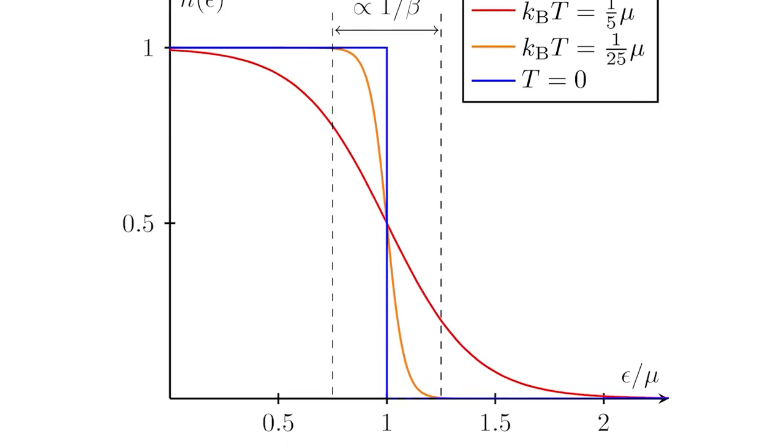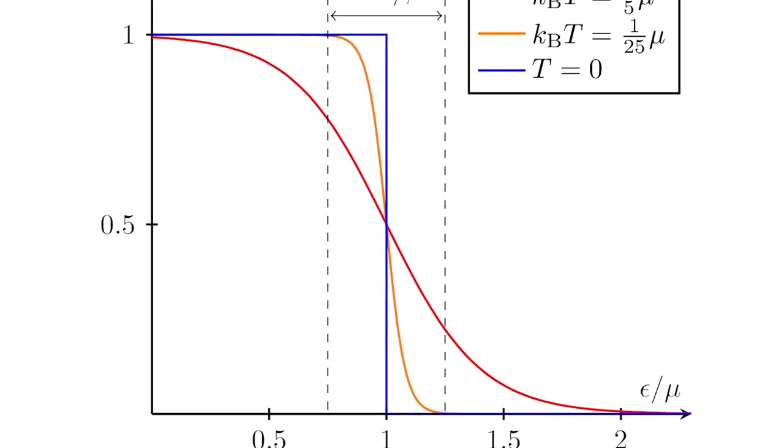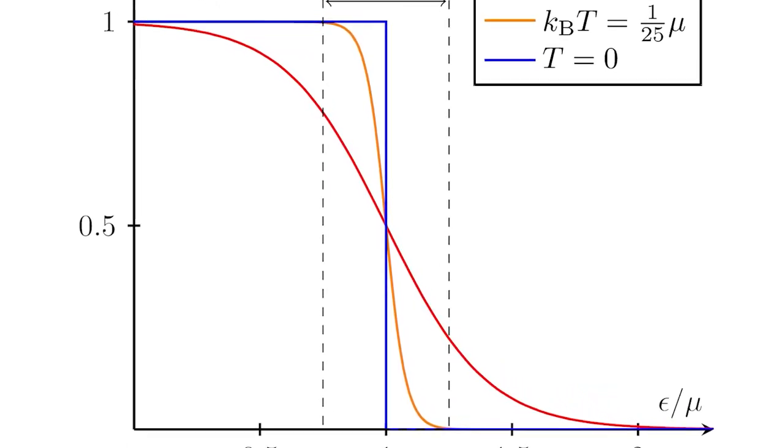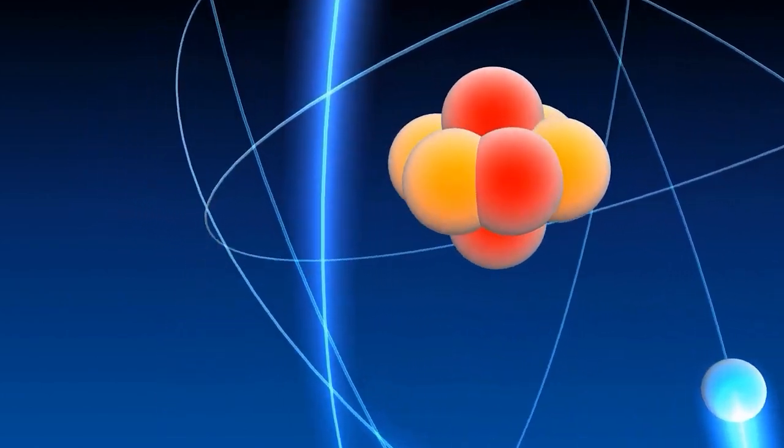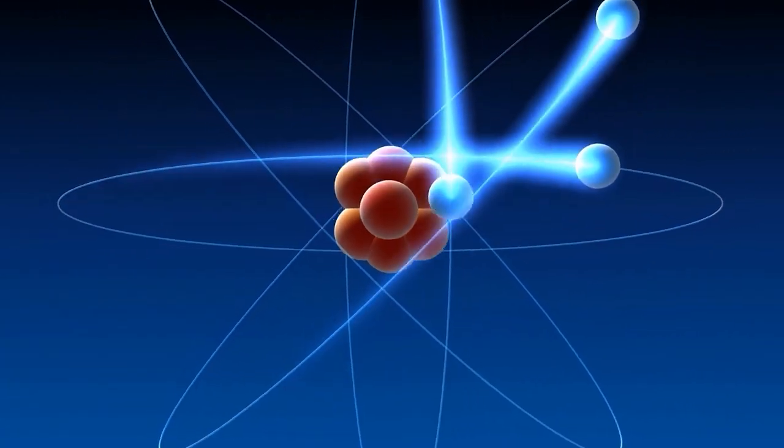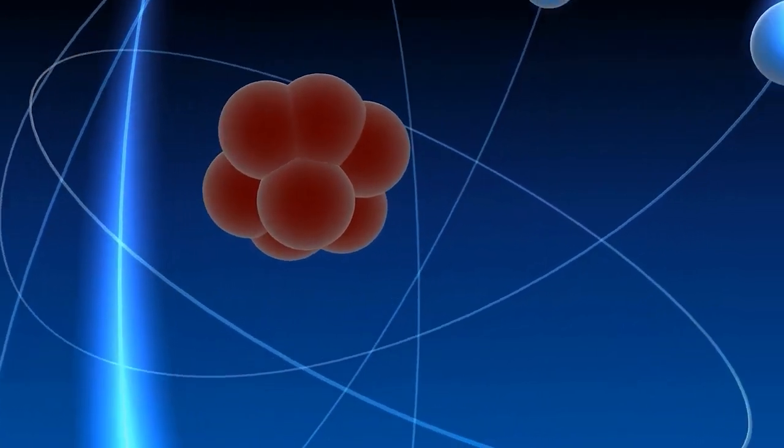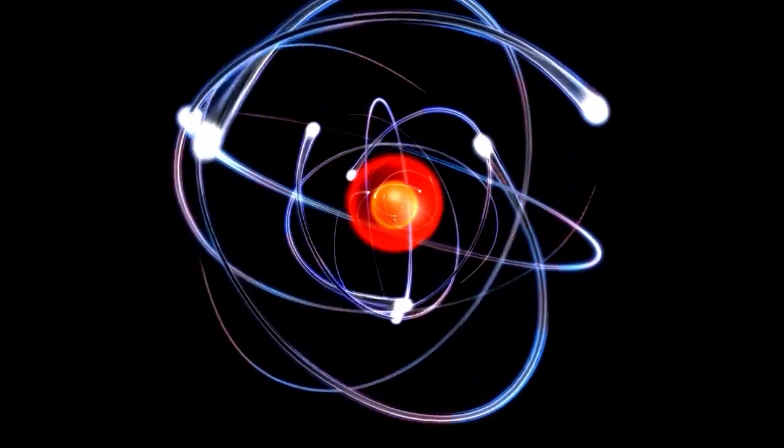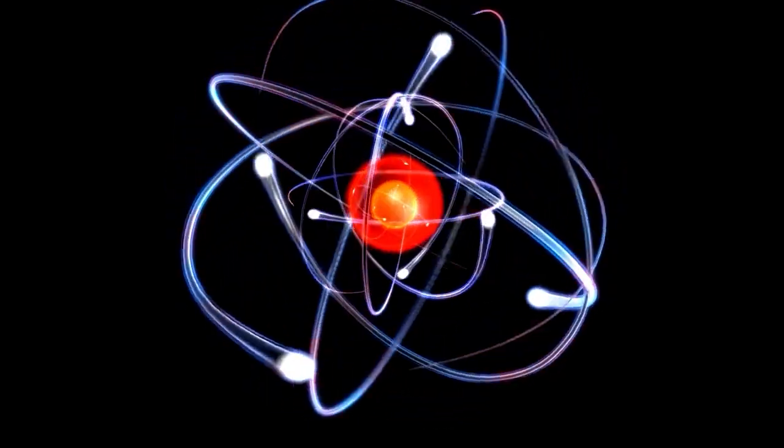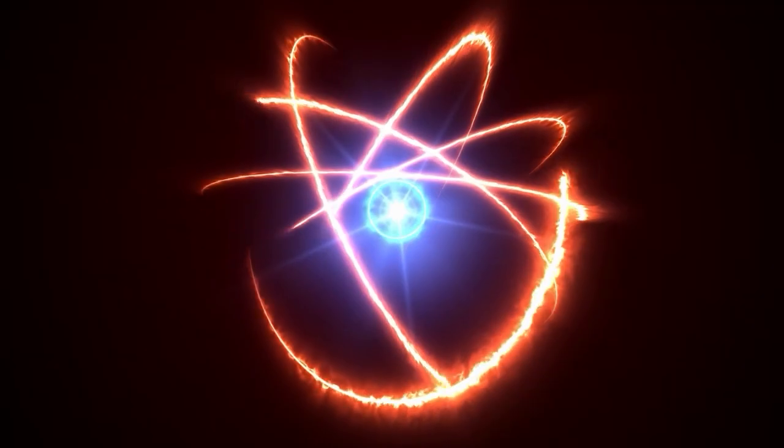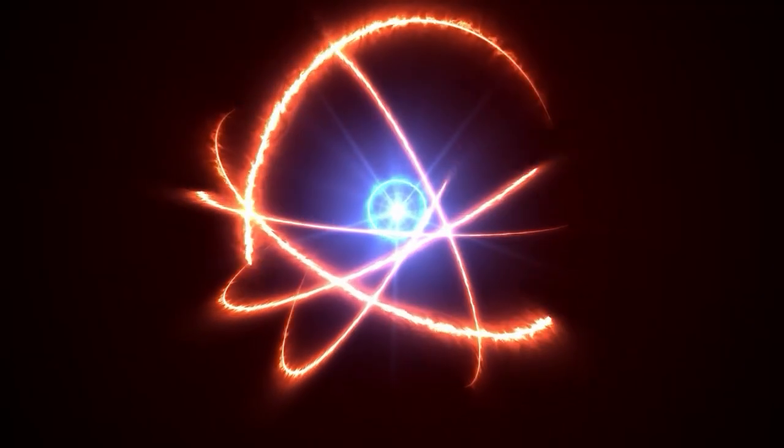In 1926, Fermi developed what is now known as the Fermi-Dirac Statistics, a fundamental concept in quantum mechanics that describes the distribution of identical particles with half-integer spins in a system. This work laid the foundation for understanding the behavior of electrons in materials, leading to the development of the field of condensed matter physics.